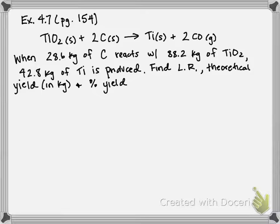This is example 4.7 on page 154 of your text. In this example, we're going to be continuing using the concept of limiting reactant and theoretical yield. We're also going to calculate the percent yield of a chemical reaction.